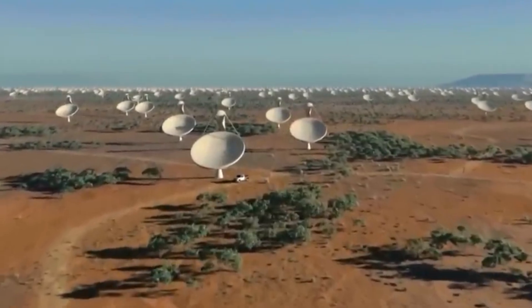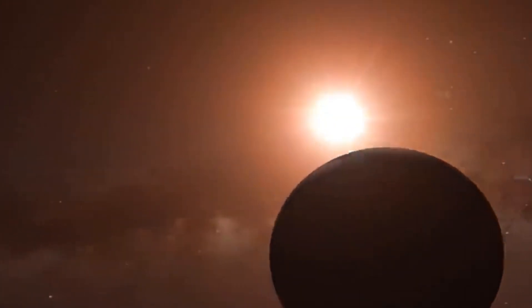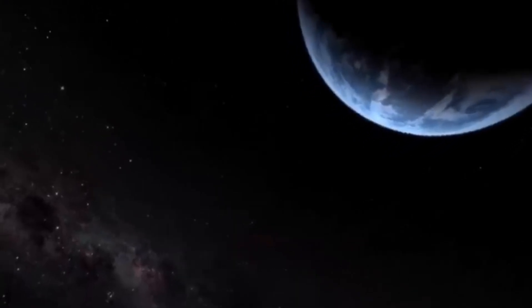Proxima b, residing just 4.2 light-years away, is a tantalizing target for exploration. Positioned in the habitable zone of Proxima Centauri, it holds the potential for liquid water on its surface, a key ingredient for life as we know it.